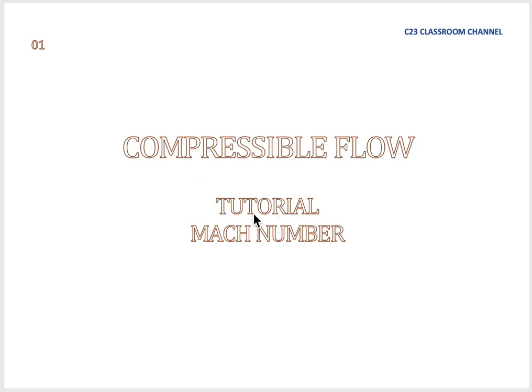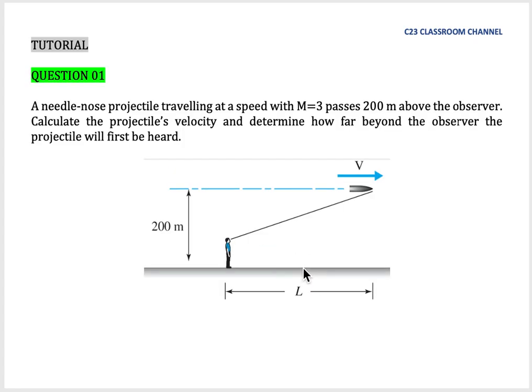Compressible flow tutorial for Mach number. Let's say we have one situation like this: a needle-nose projectile traveling at a speed of Mach 3 passes 200 meters above the observer. Calculate the projectile's velocity and determine how far beyond the observer the projectile will first be heard.